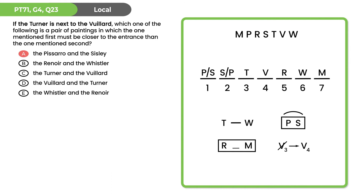Now comparing B and C to find a counterexample to either. Looking at T and V in answer choice C — we could possibly switch V and T without worrying about everything else. If V is fourth and T is third in our hypothetical, the reverse would need T in fourth and V in third, which is also valid by the fourth rule. So it doesn't have to be the case that T is before V — eliminate C. B is the right answer: R must be before W.